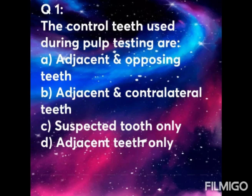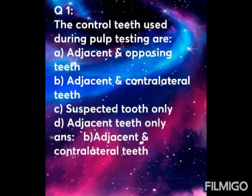Question 1: The control teeth used during pulp testing are — Option A: adjacent and opposing teeth. Option B: adjacent and contralateral teeth. Option C: suspected tooth only. Option D: adjacent teeth only. Control teeth are used for comparing with the suspected tooth. The answer is Option B — adjacent and contralateral teeth.